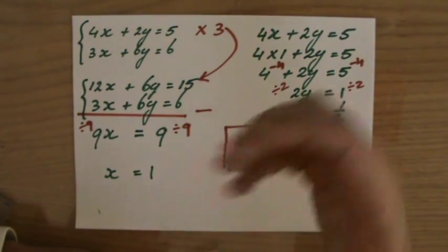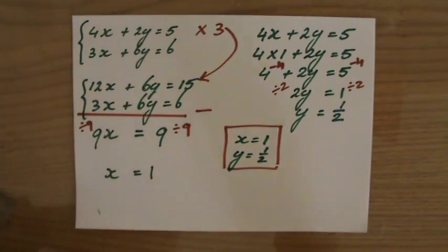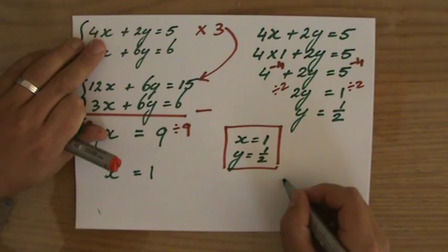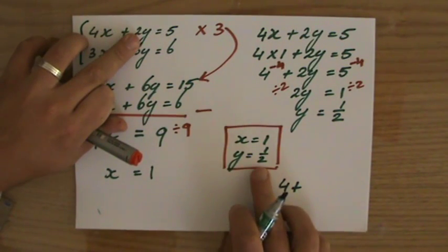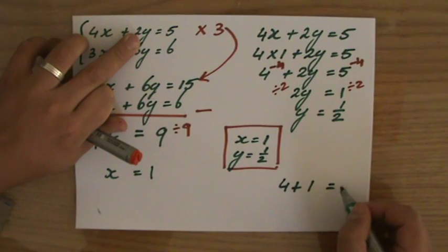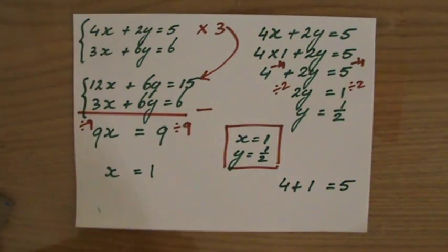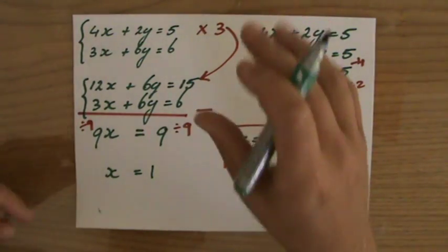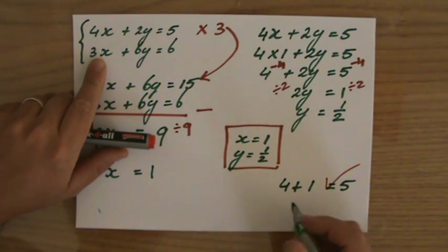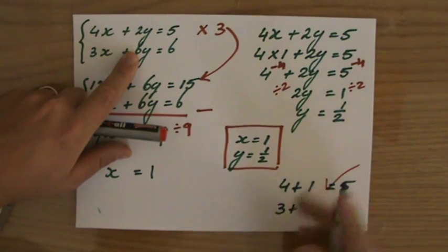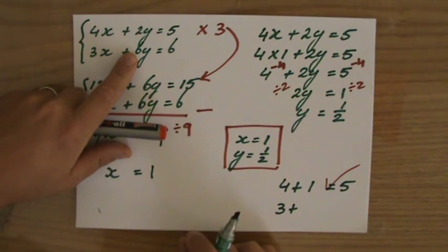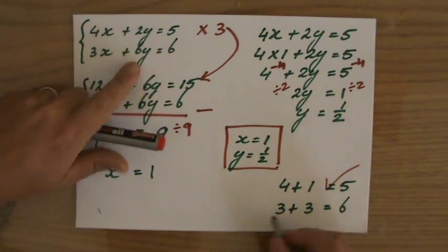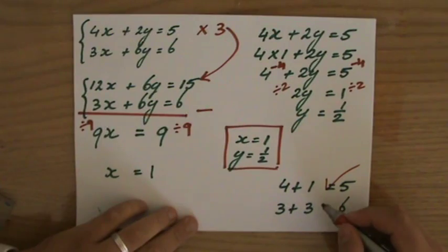What I always do with these problems, I check my workout because I want to feel good about myself. 4 times 1. I'm just going to do that quickly here now. 4 times 1 is 4 plus 2 times a half. 2 times a half is 1 and that should equal 5. Well that first equation, 4 plus 1 equals 5. That is correct. Let's look at the second equation. You always have to check both of them. 3 times x, 3 times 1 is 3 plus 6 times a half. 6 times a half is 3 and that should equal 6. 3 plus 3. Yes, that is 6. It is correct.